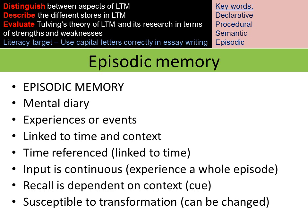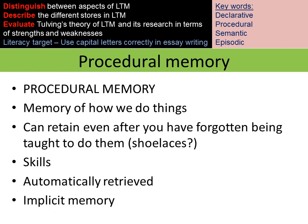Recall of episodic memories is dependent on a context cue, so often these memories come back when somebody says 'do you remember when...?' For example, on your 16th birthday you might find it easier to recall your 15th birthday. These memories are also susceptible to transformation — they can be changed. When discussing an episodic memory with a friend or parent and they mention something you hadn't remembered, that detail may be incorporated into your original memory so that next time you recall it, it becomes part of your memory.